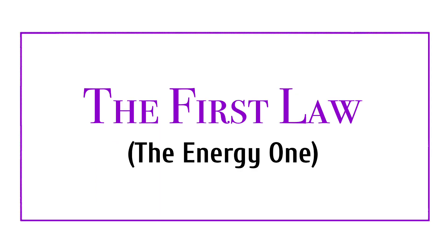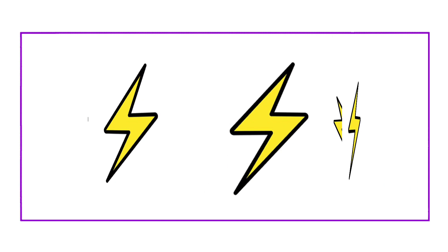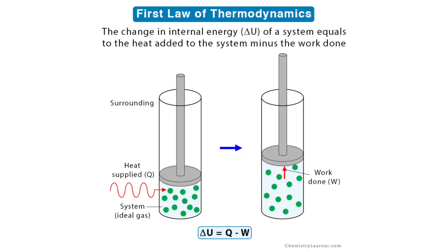For the first law, think conservation of energy — it can't be created or destroyed, it can only change forms. The change in internal energy of a system is equal to its heat transfer minus the work. For example, heating a cylinder makes the gas within expand and push the piston up. The heat entering minus the energy devoted to work equals the total change in energy during the process.